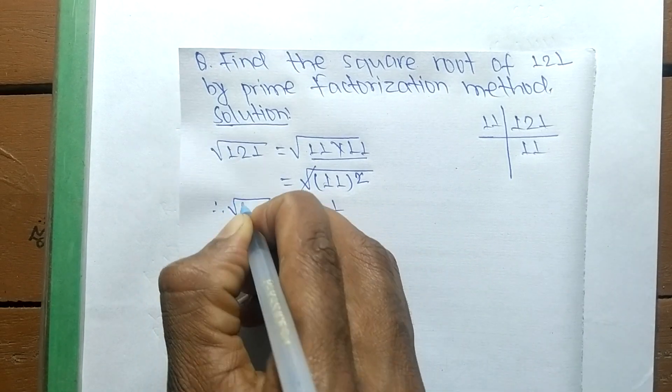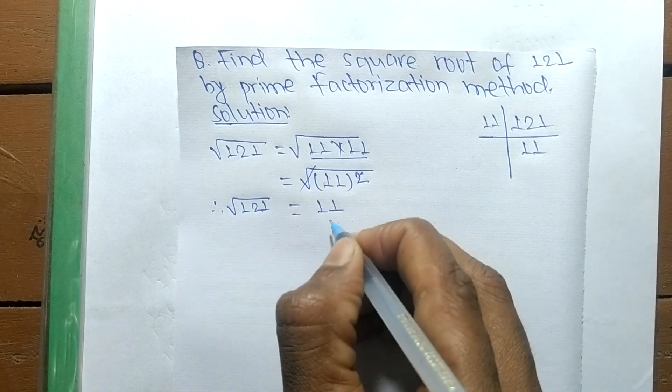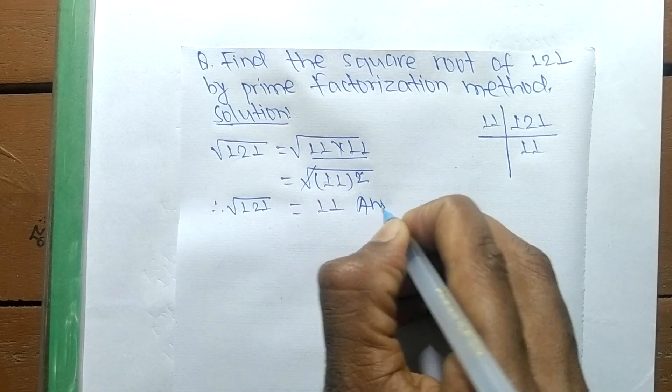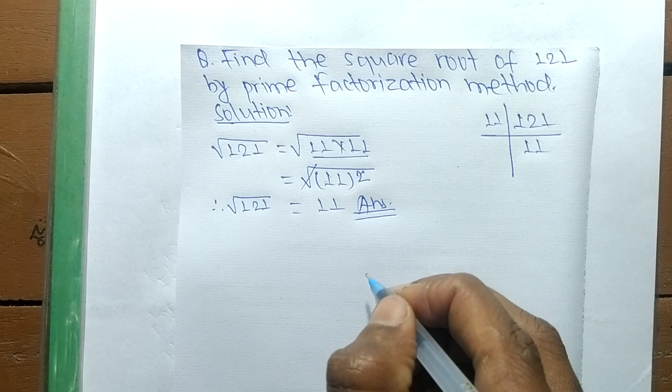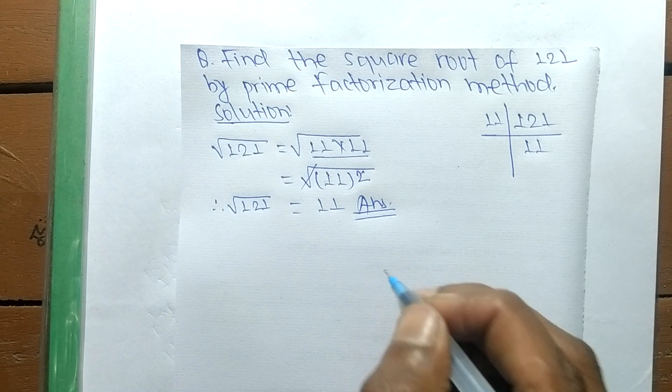Therefore, the square root of 121 is equal to 11. Thanks for watching.